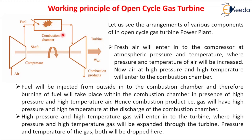Air at high pressure and high temperature will enter into the combustion chamber. Fuel is injected from outside into the combustion chamber, so burning of fuel takes place within the combustion chamber in the presence of high pressure and high temperature air. The combustion product — the gas produced — is at high pressure and high temperature, and this high temperature and high pressure exhaust discharges from the combustion chamber and enters into the gas turbine.